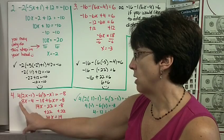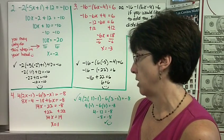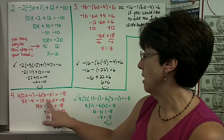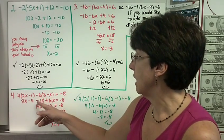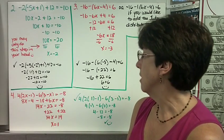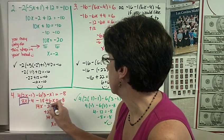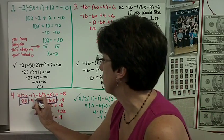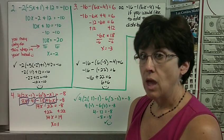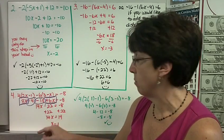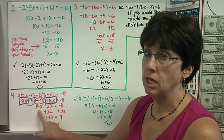Last problem: 4 times the quantity of 2x minus 1, minus 6 times the quantity of 3 minus x, equals negative 8. Apply the distributive property: 8x minus 4 minus 18 plus 6x equals negative 8. We have negatives times positives, positives times positives, and negatives times negatives — all different combinations. Combine like terms: 8x and 6x give 14x, and negative 4 and negative 18 give negative 22. I cannot move anything across the equal sign until I have two terms or fewer on this side.